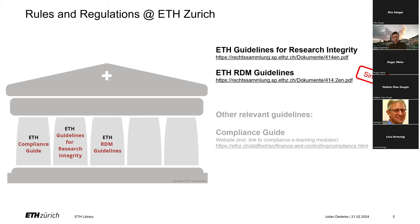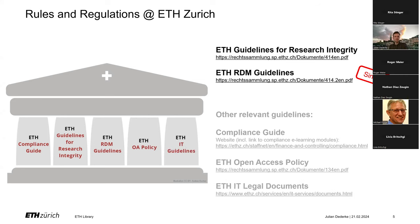There are also other related guidelines relevant for research output and for managing research data, like the compliance guide, the ETH open access policy, or the ETH IT legal documents. But the focus today is really on the ETH research data management guidelines. They include aspects of data management planning, data collection and processing, the publication of research data and scientific code, and also aspects of storage and safeguarding of research data.